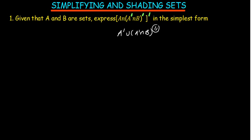From here, when you have got two complements, they are able to cancel out. So this will just be A complement union, A complement intersection B.